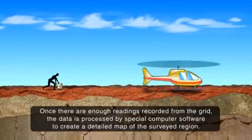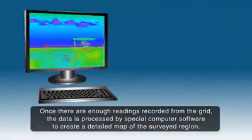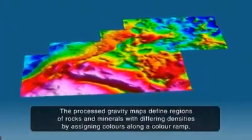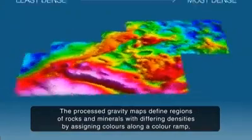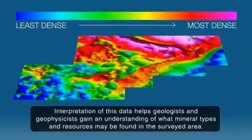Once there are enough readings recorded from the grid, the data is processed by special computer software to create a detailed map of the surveyed region. The processed gravity maps define regions of rocks and minerals with differing densities by assigning colours along a colour ramp, where the red end of the spectrum indicates more dense rocks and the green end indicates lighter rocks. Interpretation of this data helps geologists and geophysicists gain an understanding of what mineral types and resources may be found in the surveyed area.